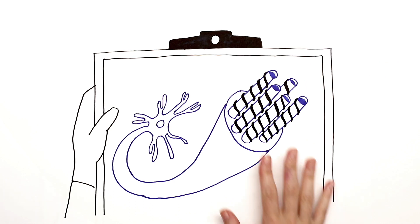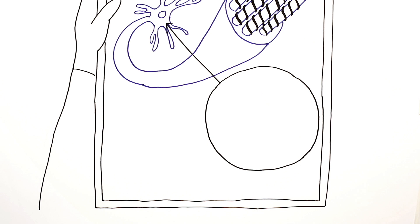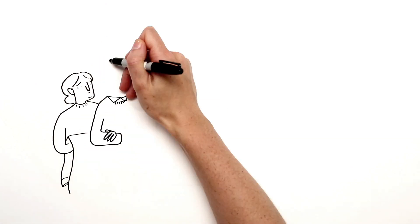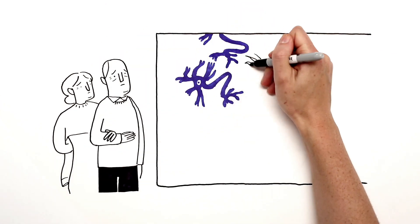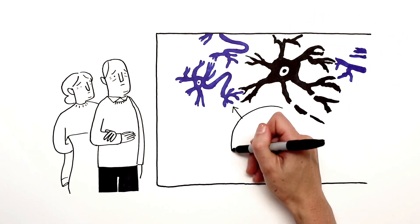But in a neuron affected by Alzheimer's, tau proteins abnormally stick together inside the neuron, forming into twisted tangles. Without their supply of tau proteins, the microtubules begin to disintegrate. The neuron starts to die and the disease spreads to neighboring neurons and other parts of the brain.